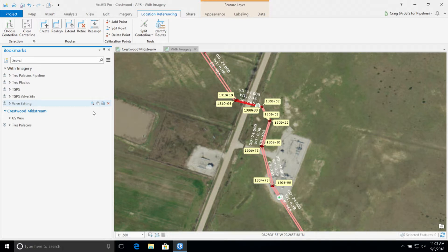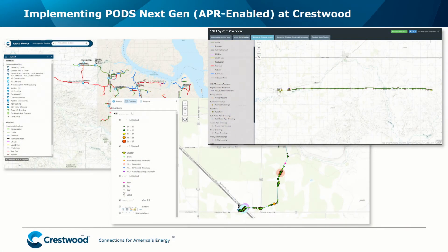The key point here is that once you have all your data stored in one central database, you can begin to publish it out to your entire organization — the many stakeholders who need it to make decisions. We have portal implemented and these are just a few examples of how we publish it out at Crestwood. We have a simple asset viewer with our pipelines and facilities. Here's an example of some of our ILI data posted with clustering based on metal loss anomalies and percent depth, which is very useful to our asset integrity department. Our regulatory pipeline compliance team also likes our story maps — we set up a story map for a PHMSA audit with different tabs to click through and zoom into different areas of the system to answer questions and ensure compliance.